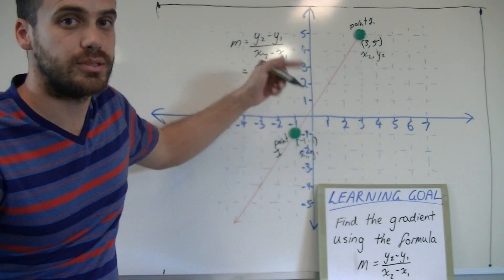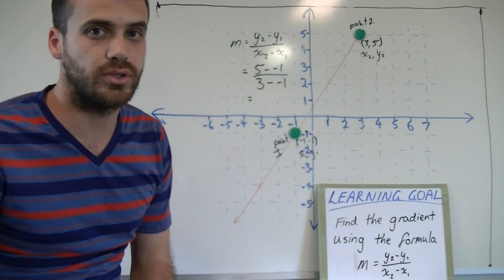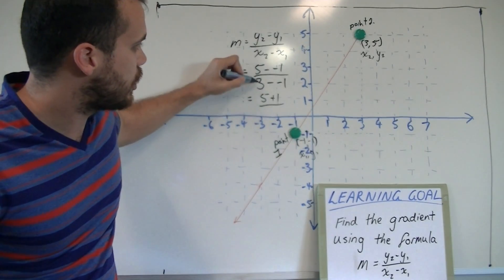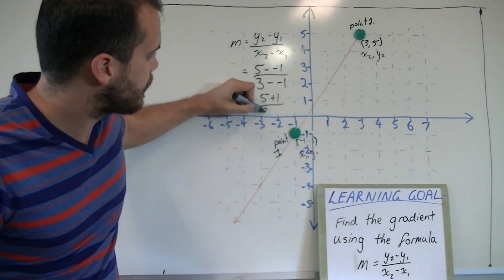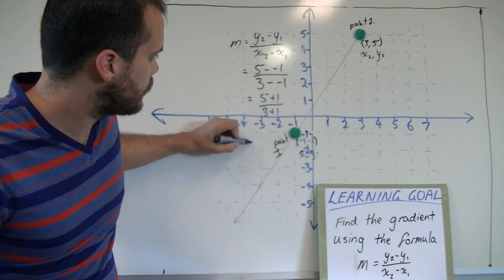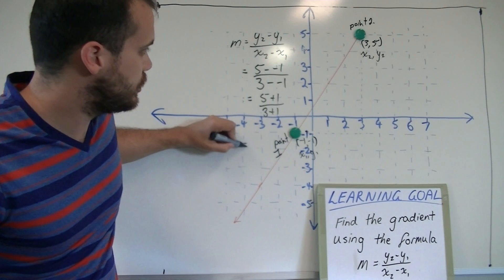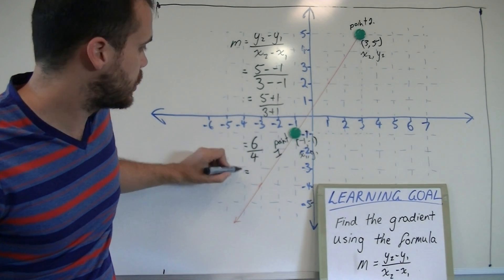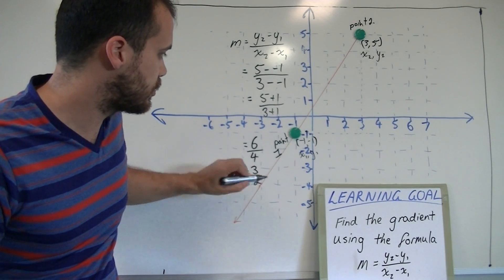5 minus negative 1, you can type that directly into your calculator. You should be able to realize that's 5 plus 1 over 3 plus 1. That's going to equal 6 over 4, which can simplify to 3 over 2.